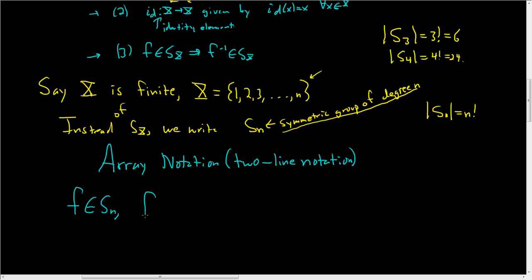If we take an element f in the symmetric group of degree n, we can represent this element by an array. In the top row we'll have 1, 2, dot dot dot, n—these are all elements of X. Then where does 1 go? It goes to f of 1. 2 goes to f of 2, dot dot dot, and n goes to f of n.